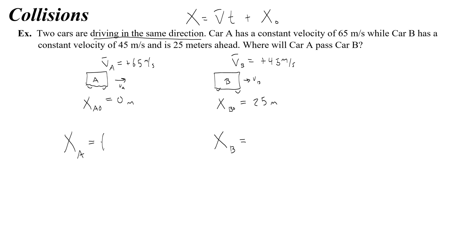So for A, I would use the velocity of A, which would be 65t, and the initial position is 0, so I don't add anything. B would be 45t, and the initial position is 25.